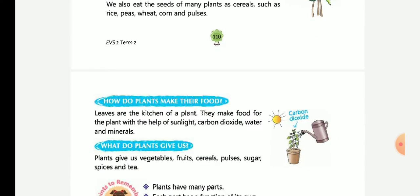How do plants make their food? Leaves are called the kitchen of the plant and they make their food using water and minerals. What do plants give us? Plants give us vegetables, fruits, sugar, spices and tea.